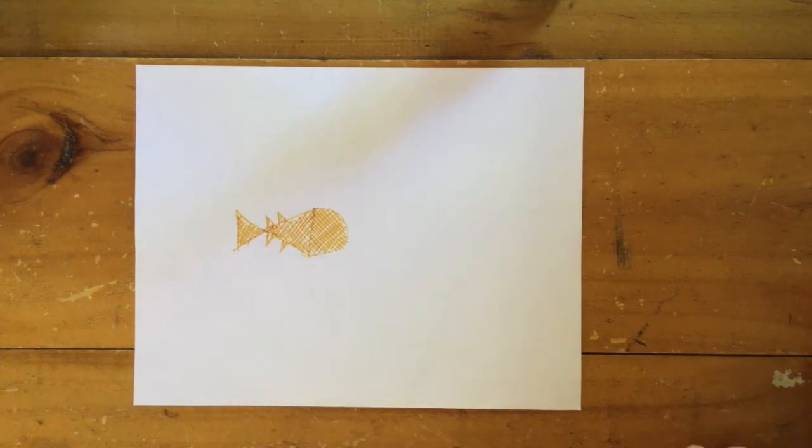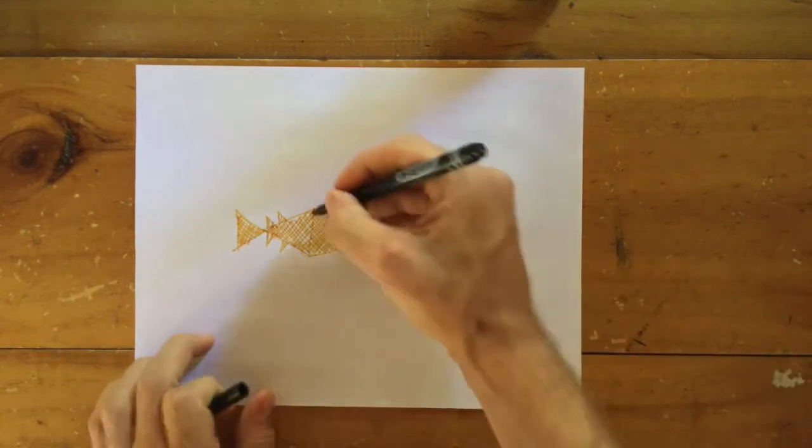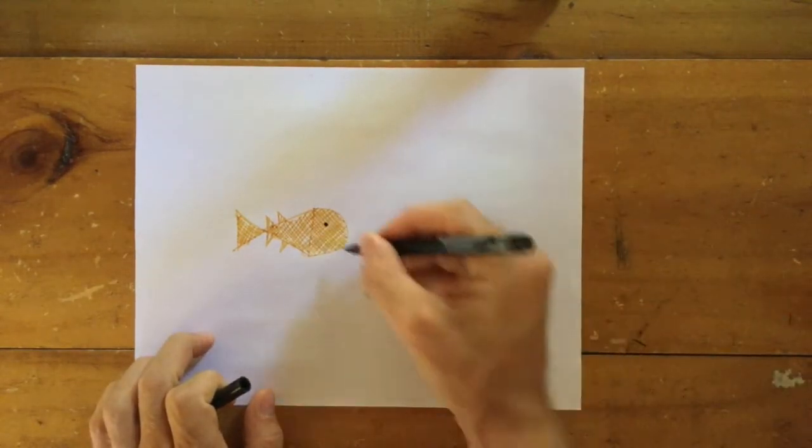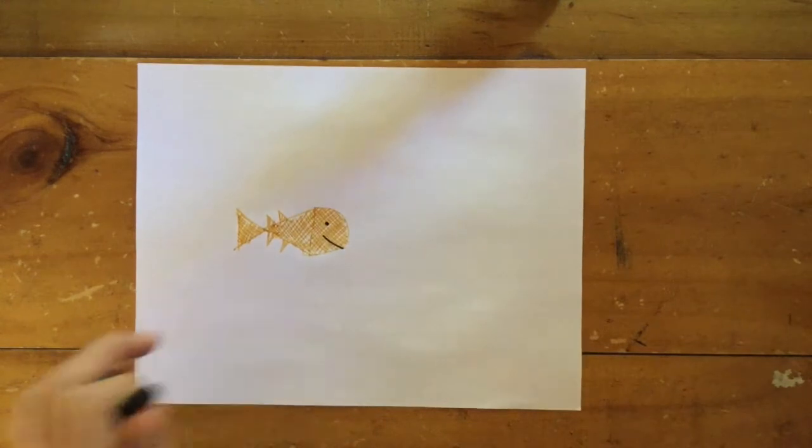Now we're going to need a black marker. And we can add some extra detail, an eye and a mouth. Like I said, we're going to start simple. There you have it, a golden nugget coloured fish.